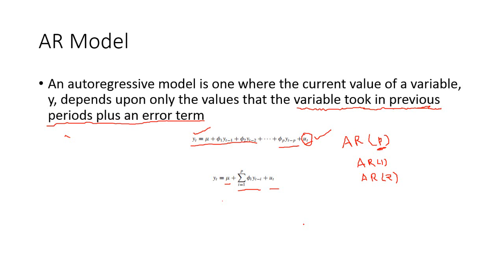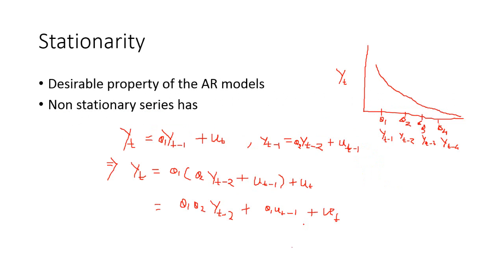For example, say we have a stock price for today and we have stock price data for the last 30 days. That is our series. So we write: stock price for today depends on stock price for yesterday, the day before yesterday, and so on. The dependency will go down as you go further back in time — as you keep increasing the lags, the dependency of today's price on those earlier values goes down.